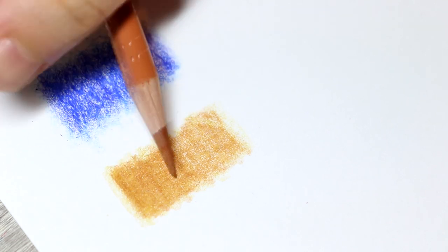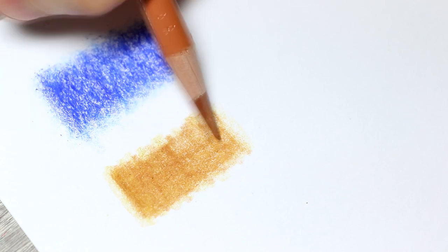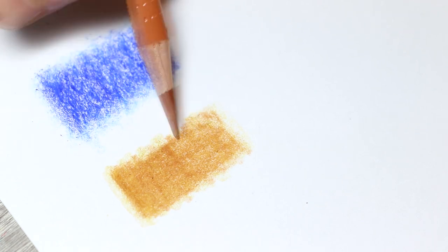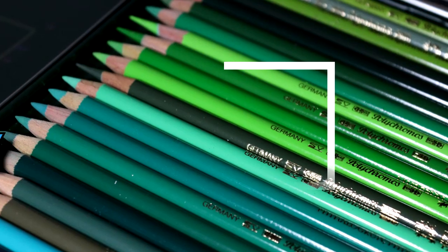Although wax pencils are softer and easier to layer, they do produce a lot of wax bloom due to the waxy binder spreading over the paper. This wax bloom creates a shine as soon as the light hits it, whereas you don't get a wax bloom with oil pencils.